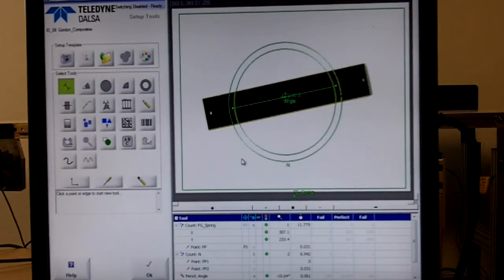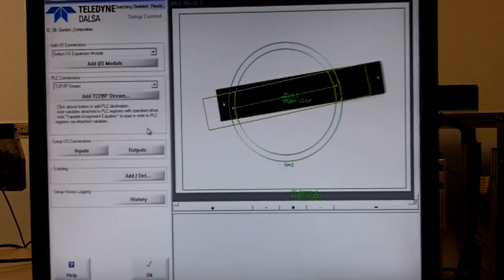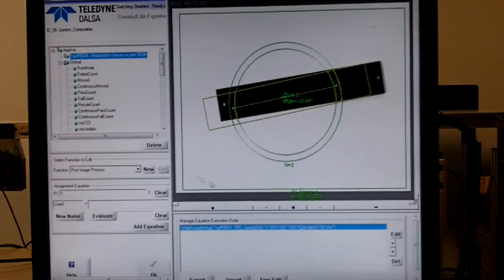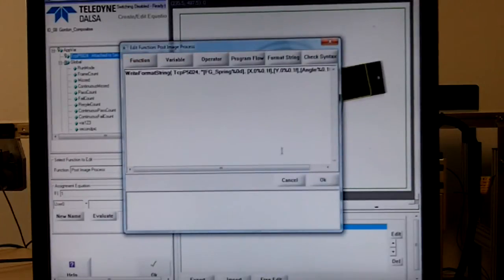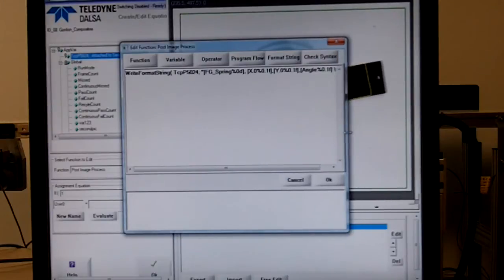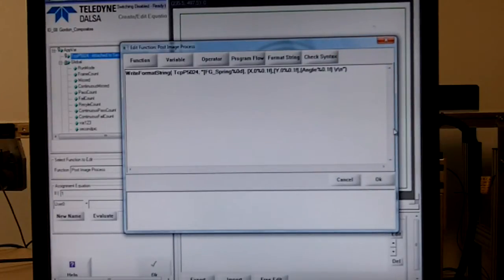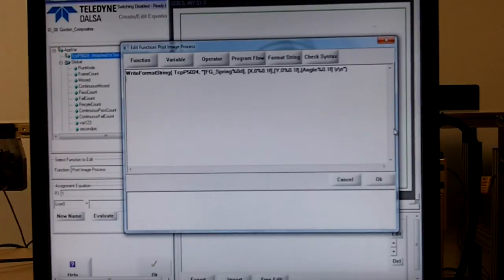So in order to do that, we have to set up a one-line script. Coming over here to control and then scripting, we're going to put that one-line script under the post image process function. So what that means is whenever the camera is finished taking a picture, it's going to go ahead and run this script and send this out its TCP IP port.